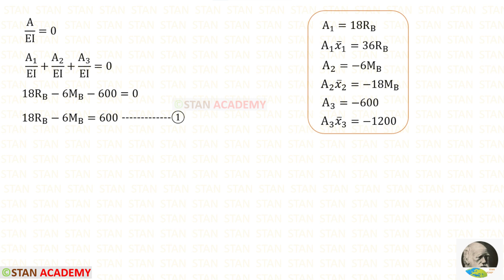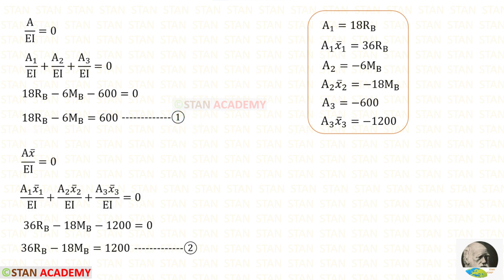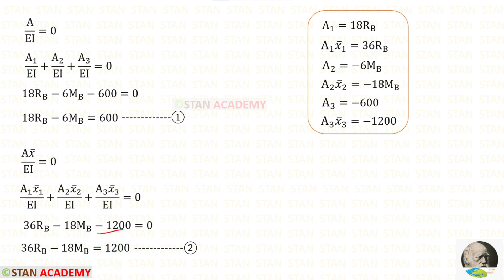At the fixed end there will be no slope, so the sum of areas divided by EI equals zero. Adding all three area values — EI is constant so it is eliminated — and moving −600 to the other side gives Equation 1: 18Rb − 6Mb = 600. At the fixed end there is also no deflection, so the sum of area times x̄ divided by EI equals zero. Adding Area 1·x̄₁, Area 2·x̄₂, and Area 3·x̄₃, and moving −1200 to the other side gives Equation 2: 36Rb − 18Mb = 1200.